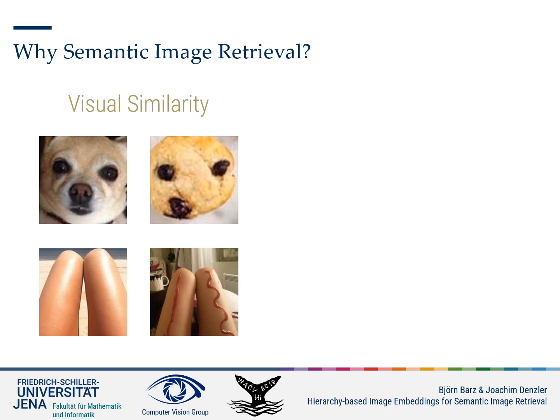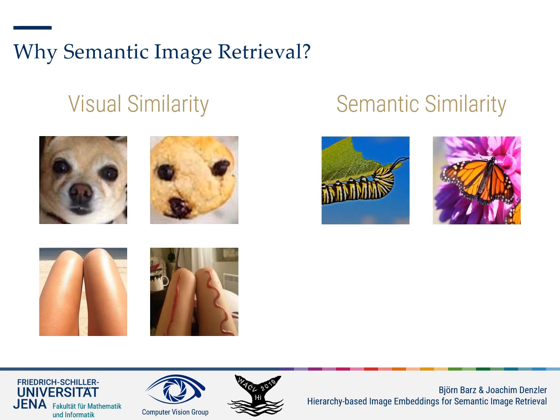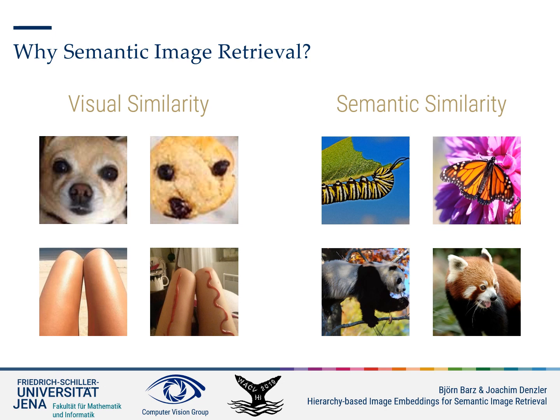A chihuahua and a muffin may look quite similar, but they are not semantically related at all. As humans, however, we will always see semantics in images and, consequently, compare images with respect to their semantic similarity. A caterpillar and a butterfly may not look particularly similar, but we can still think of them as being similar because the caterpillar will turn into a butterfly at some point. Similarly, the giant panda and the lesser panda are semantically related — in the WordNet ontology, these two concepts are direct sister terms.